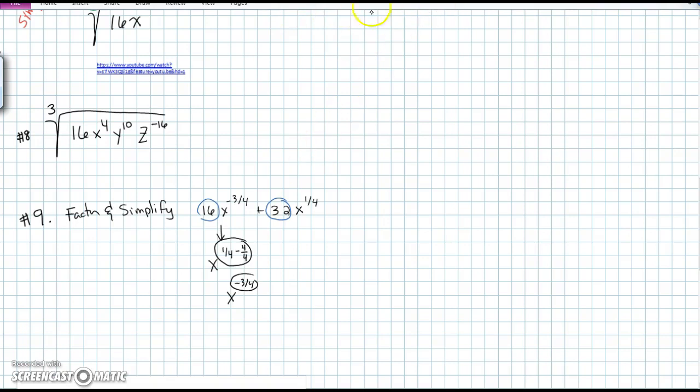And so as soon as it's written that way, I can also write it like this: x to the 1 quarter over x to the 1, because a negative exponent moves us to the denominator. I still have 16 plus 32 x to the 1 quarter.